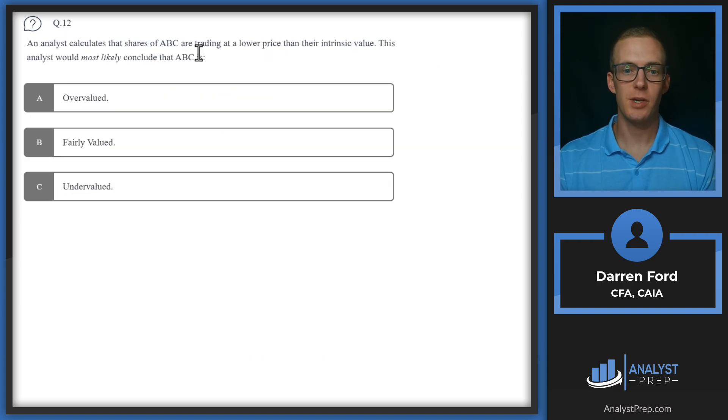Question 12. An analyst calculates that shares of ABC are trading at a lower price than their intrinsic value. This analyst would most likely conclude that ABC is overvalued, fairly valued, or undervalued. It's trading at a lower price than its intrinsic value. So let's say the stock is trading at $10, but we think it's worth $15. This indicates we think the stock can go up $5. The market is assigning it a value of $10, we're assigning it a value of $15. So in this case, we would say the stock is undervalued.